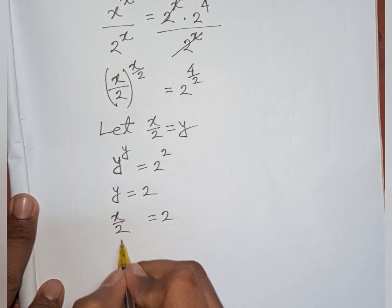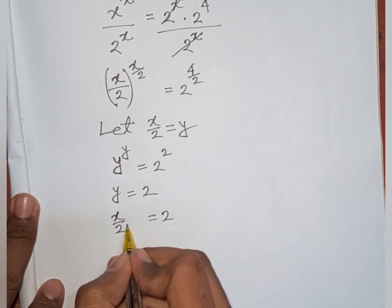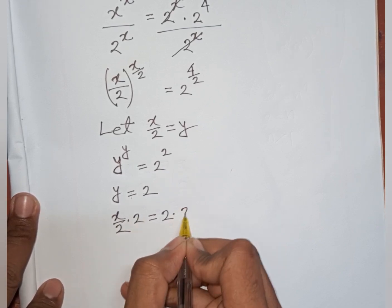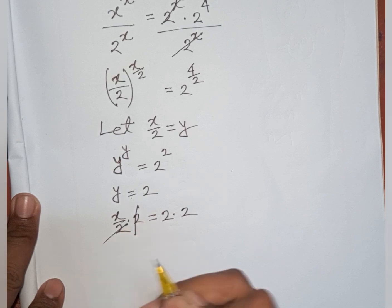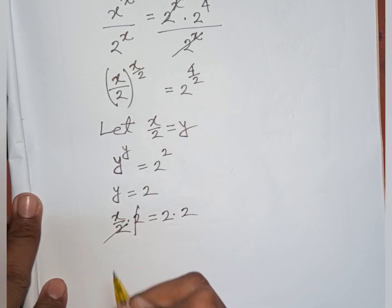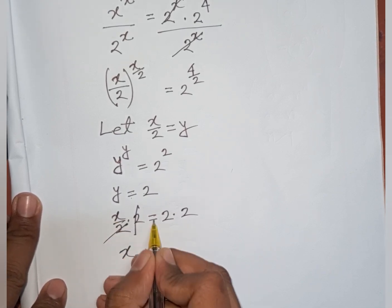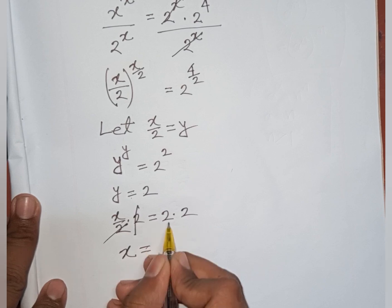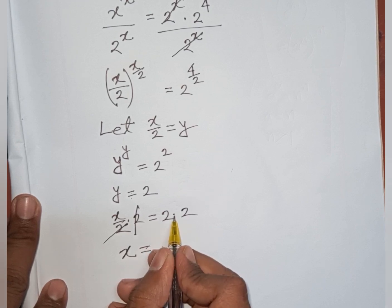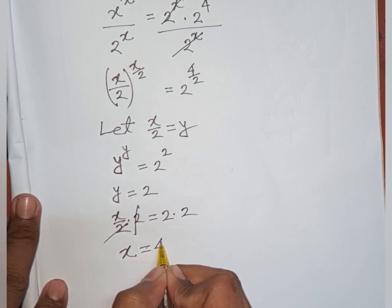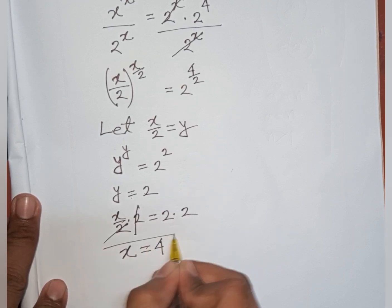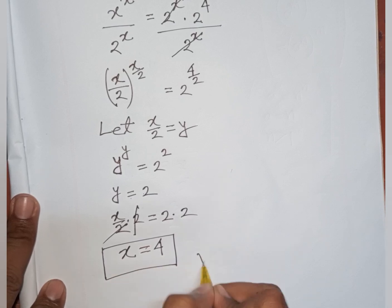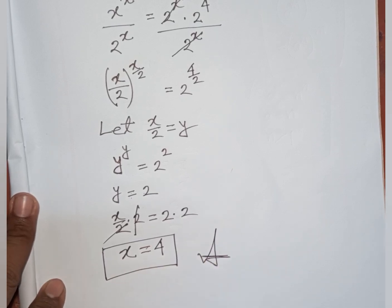We need the value of x, so multiply both sides by 2. The 2 cancels on the left, giving x equals 2 times 2, which is 4. So x equals 4 is our final answer.